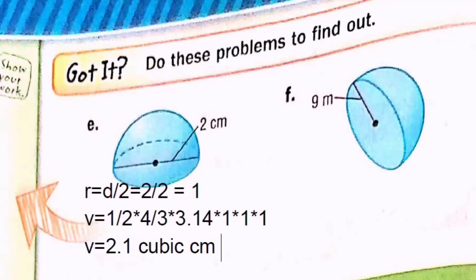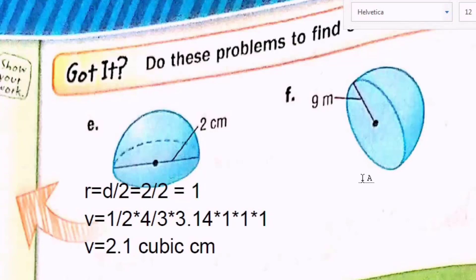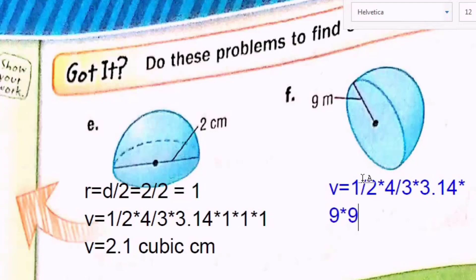In the second example, F: I have a radius of 9.9 millimeters. So radius equals 9.9. Volume of a hemisphere = 1 over 2 × 4 over 3 × pi (3.14) × r³ = 1 over 2 × 4 over 3 × 3.14 × 9.9³ = 9.9 × 9.9 × 9.9. Rounded to the nearest tenth, the answer is approximately 1,526.8 cubic millimeters, or mm³.